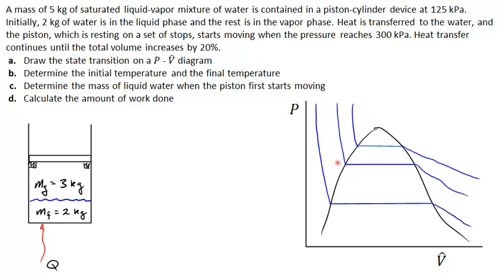Here are correctly drawn isotherms for three different temperatures. In all cases, you squeeze on the liquid and the pressure shoots up. Here we are in the two-phase envelope, and then when we're out in the superheated vapor region, increasing the volume would reduce the pressure.